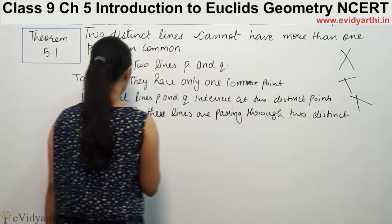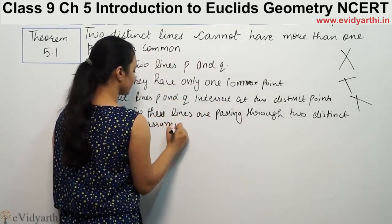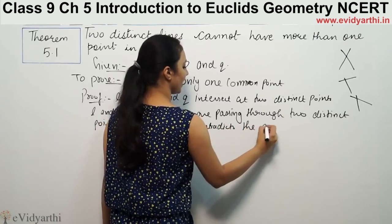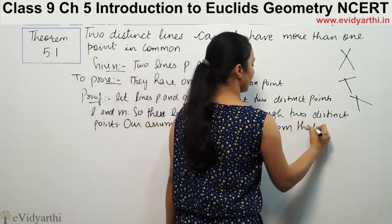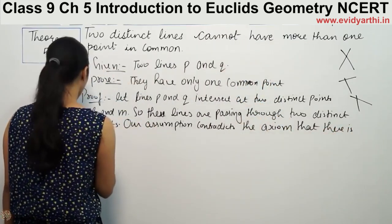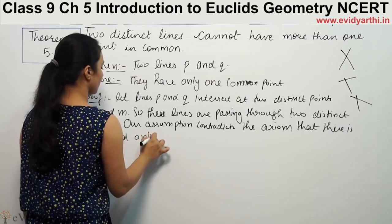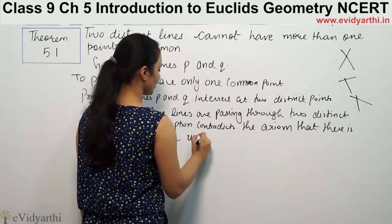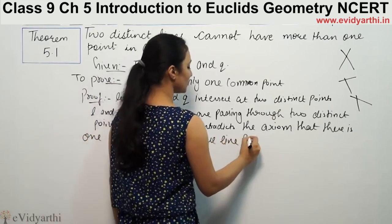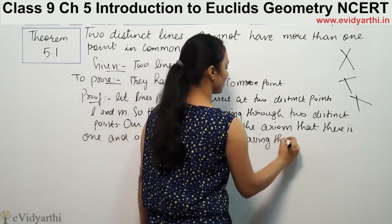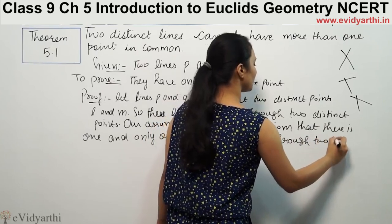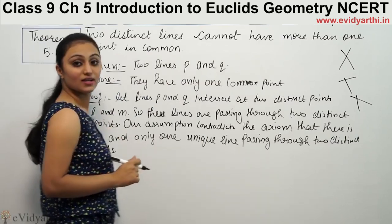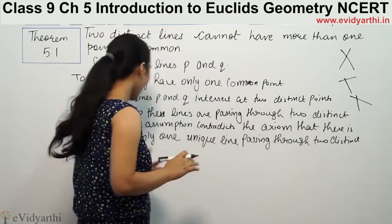So our assumption contradicts the axiom that there is one and only one unique line passing through two distinct points.